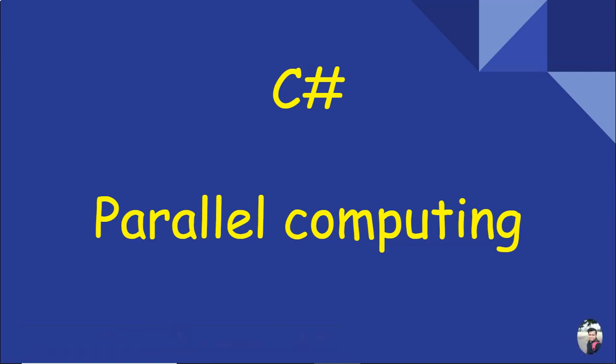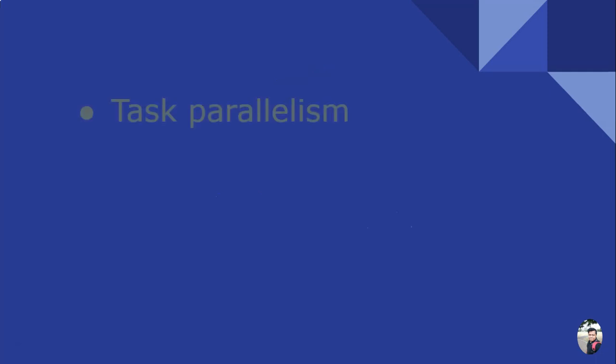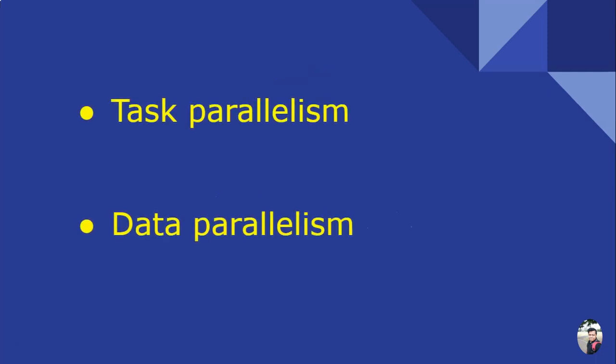Hello, good day friend! Today we'll talk on parallel computing in C#. Parallel computing in C# can be achieved in two ways: by task parallelism and by data parallelism.